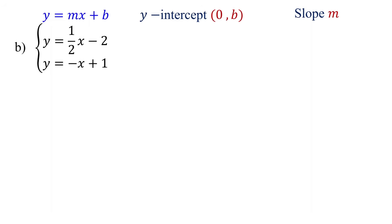For the first equation, the y-intercept is at (0, -2) and the slope is 1/2. For the second equation, the y-intercept is at (0, 1) and the slope is negative 1.